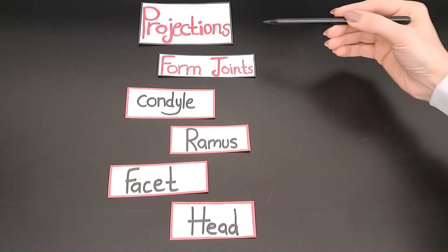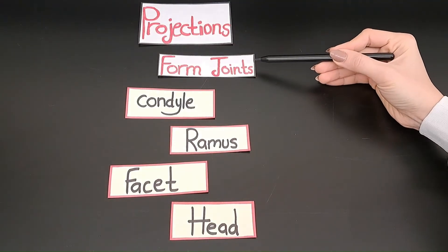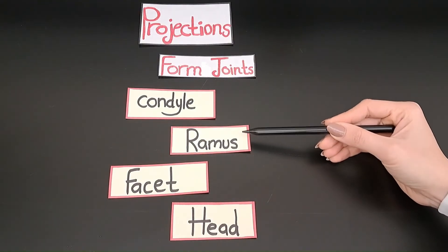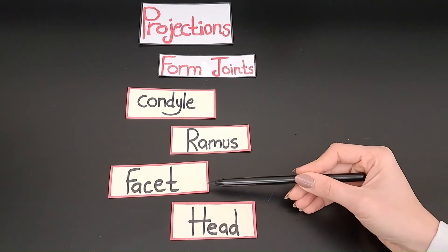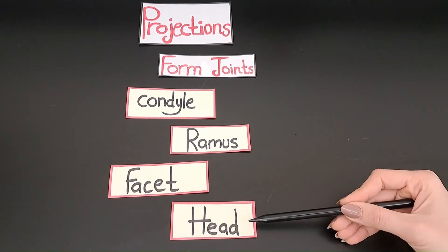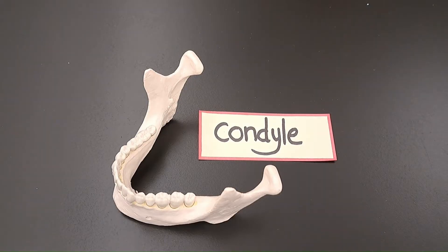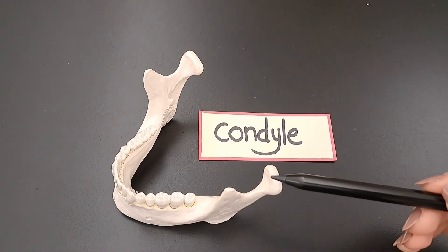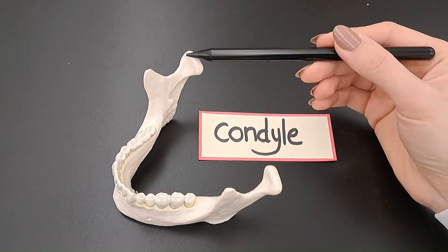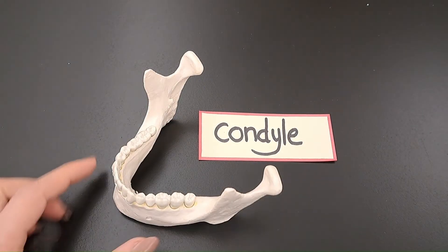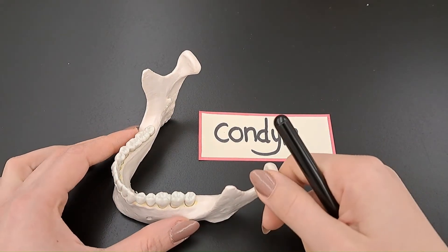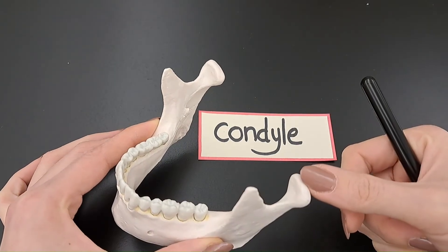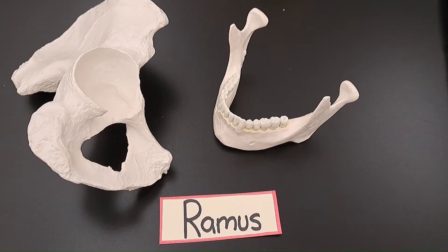Projections on the bones that form joints: we have a condyle, a ramus, a facet, and a head. Starting with the first projection, a condyle, which is a rounded articular process. This is the mandible, and these are the mandibular condyles.